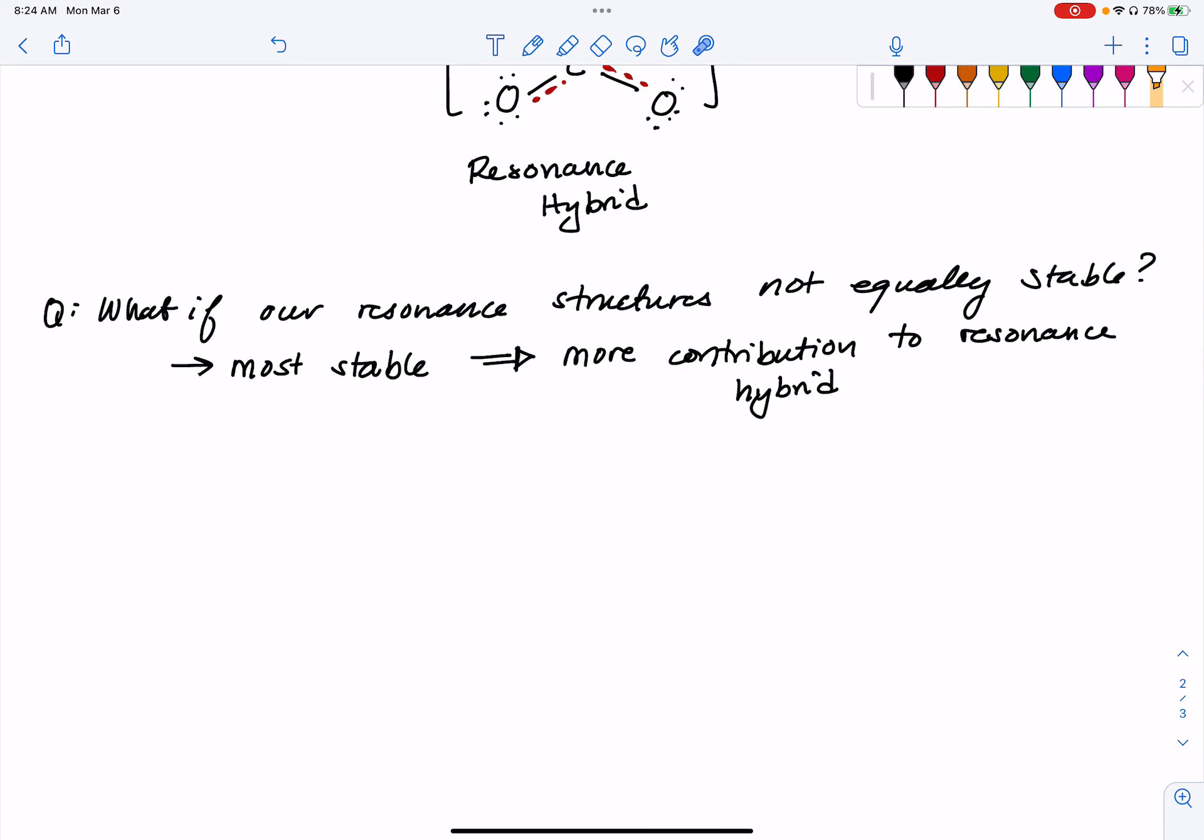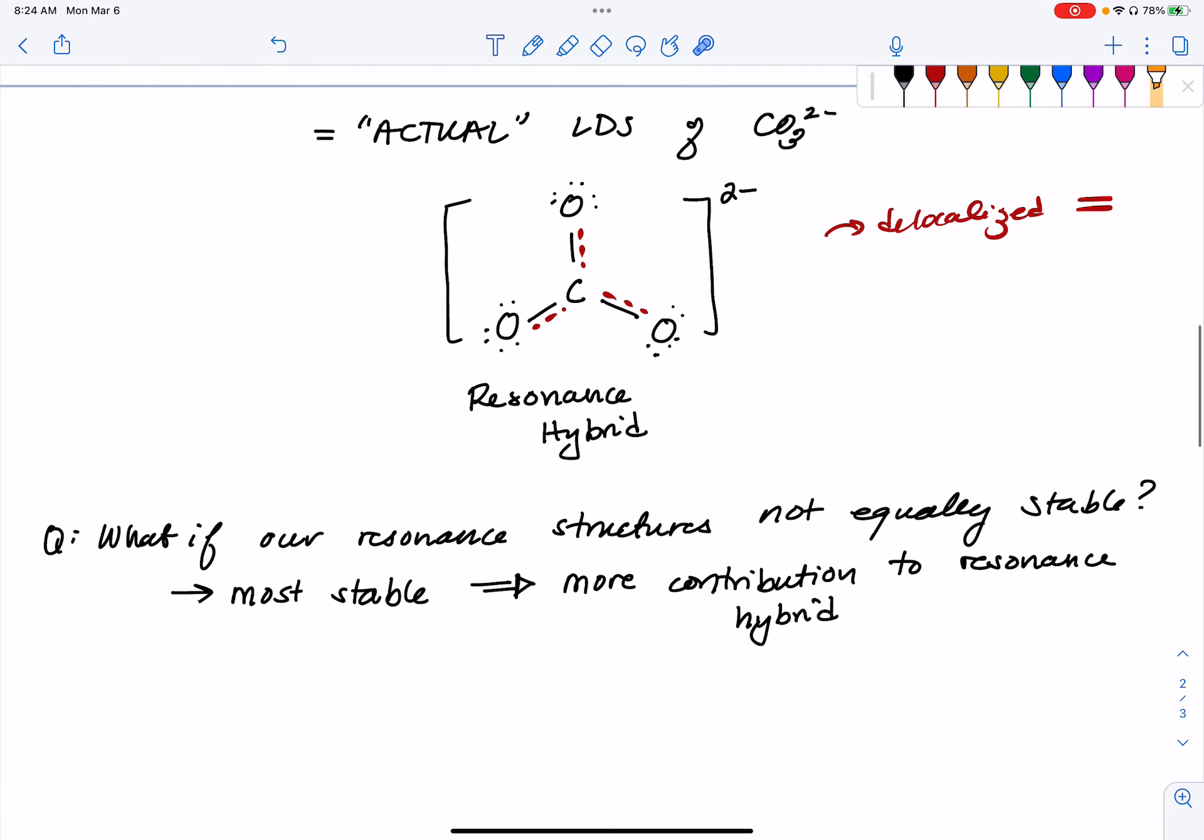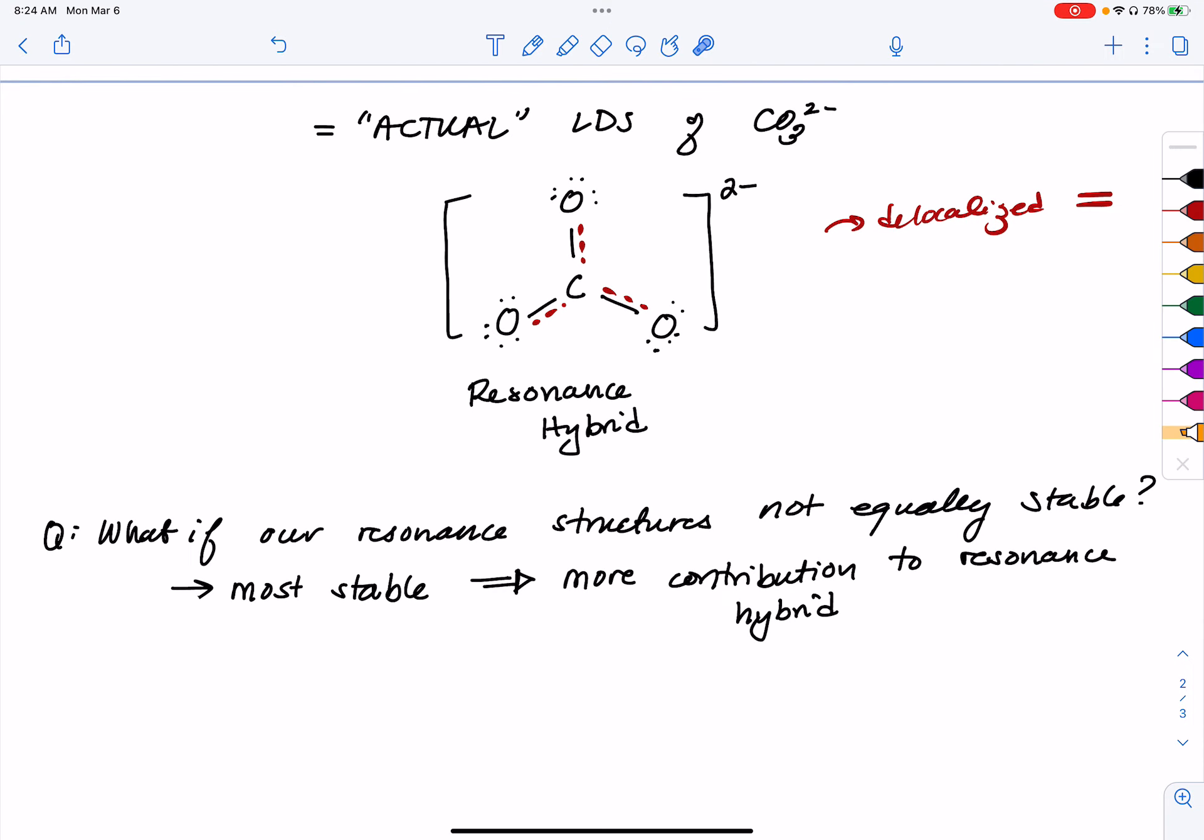So you can think of resonance hybrids from resonance structures that are not equally equivalent as kind of being like a genetic scenario, if we're thinking about combinations. So let's say that your mom and your dad or whatever, your parents, they have equally as strong a gene that they're passing on. That would mean that you and your siblings would look like some kind of perfect hybrid between your parents. Their genotypic expression through both of you is going to be equal because they both carry strong genes.